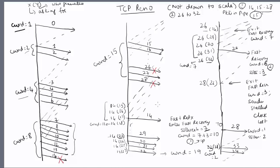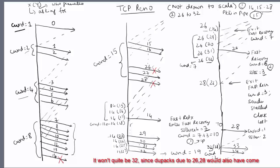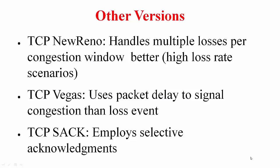TCP Reno doesn't do well with multiple losses in a window — here 26 and 28 were both lost, and it had to timeout to recover. If only 14 had been lost, fast retransmit would have handled it and the ACK for 14 would have acknowledged all packets up to 32, after which congestion avoidance would slowly probe the network. TCP Reno is great for a single loss per window but stalls with multiple losses, making it unsuitable for high loss rate scenarios.